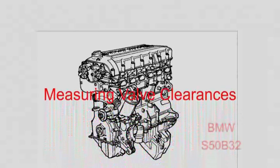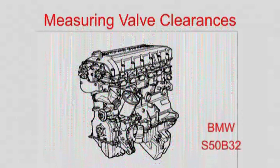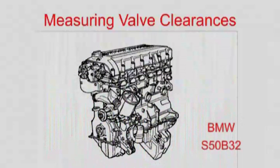In this video we will be checking the exhaust valve clearances on a BMW S50 B32 engine. This is the engine used on the M Roadster, the M Coupe and the E36 M3.